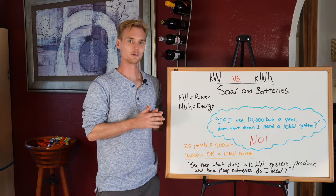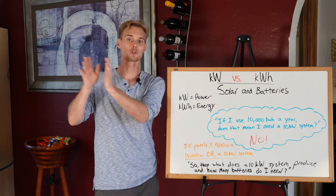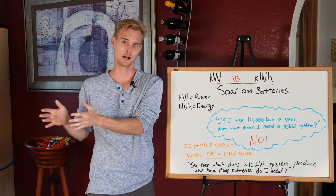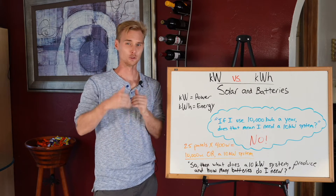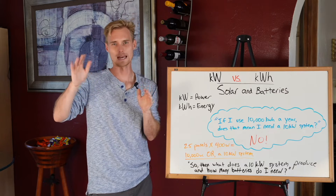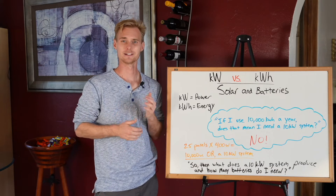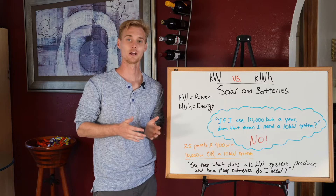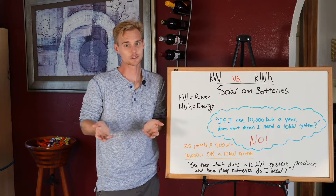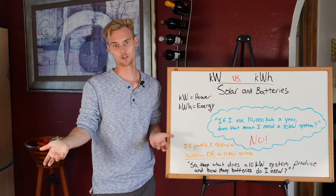The kilowatt hour calculation works the same way but over 365 days. The math won't come out to where a 10 kilowatt system magically produces 10,000 kilowatt hours. In North America, depending on where you are, the ratio of kilowatts to kilowatt hour production is usually around 1.4 to 1.8. A 10 kilowatt system in Southern California may produce around 16,000 to 18,000 kilowatt hours through the year. So if you're using 10,000 kilowatt hours, you probably need something closer to a six or seven kilowatt system.